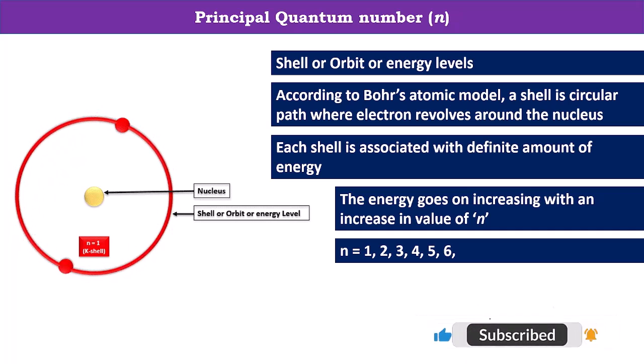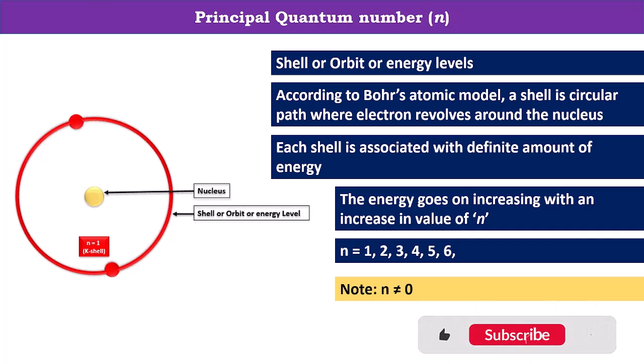The value of principal quantum number or n should be 1, 2, 3, 4 and so on. The value of principal quantum number is never 0.